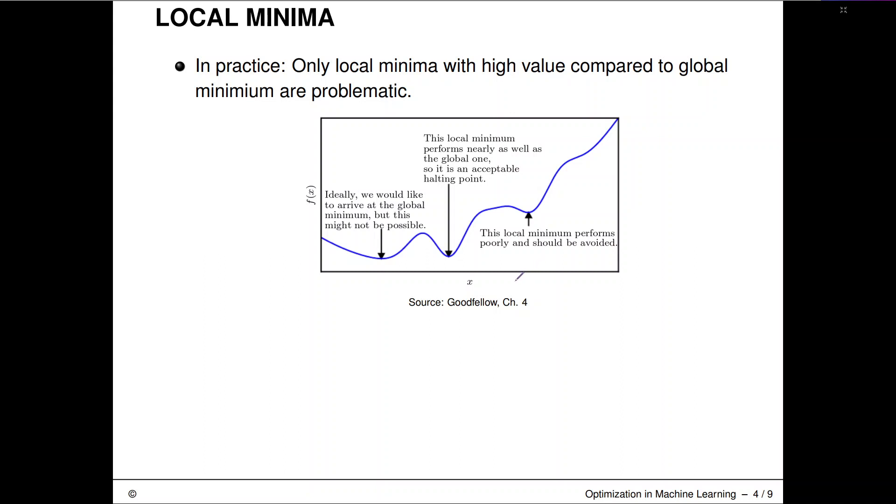This guy here is obviously not so great. If you would start from here, we might converge to this and it's much worse than these two. Ideally, we would like to reach the global minimum here. If you look very closely at this plot, this is maybe one millimeter below this guy. But if we would converge from here to this guy, this would not be that bad.